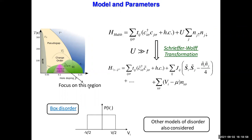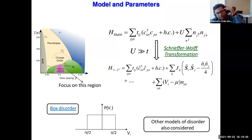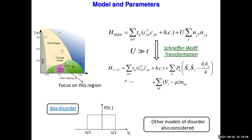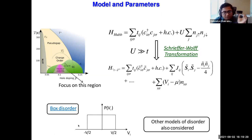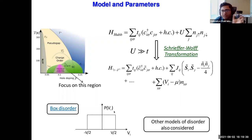The interaction strength J_ij is of order t² / U. We put in disorder via a term v_i n_i — a non-magnetic disorder. For the rest of this talk I focus on box disorder: on-site chemical potentials different at all sites, drawn from a uniform distribution from −V/2 to +V/2. The strength of disorder is quantified by this width V. We have also considered other disorder models that give qualitatively similar results but will not discuss them here.